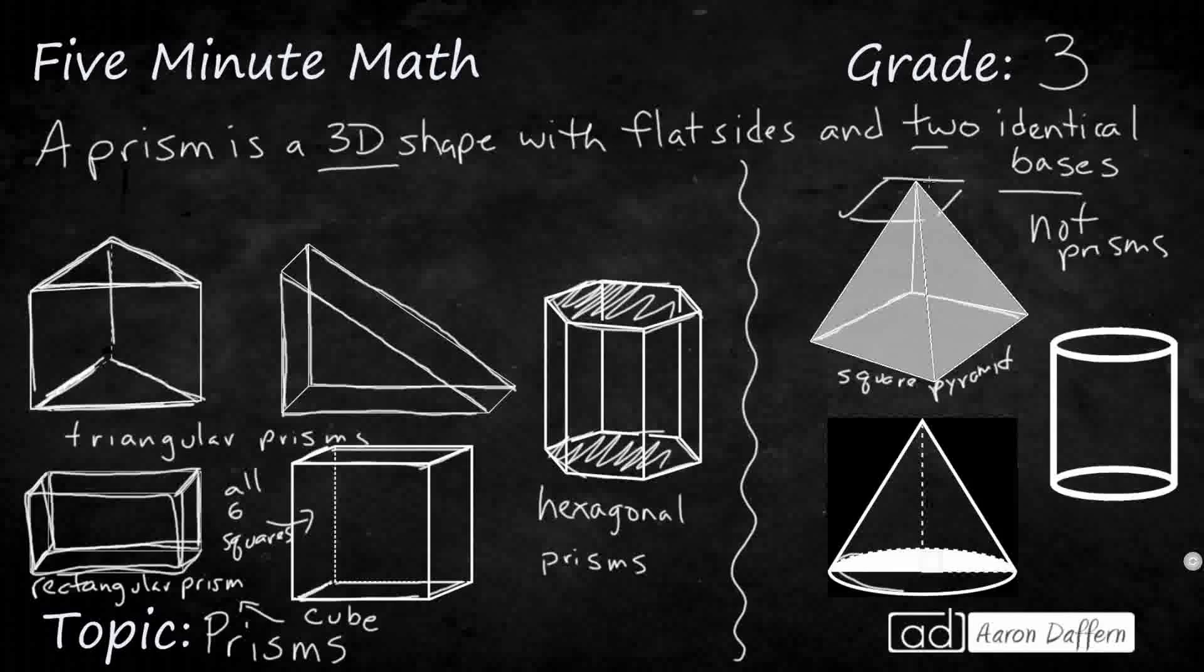This has a circular base, and it's got a curved side. So this cone right here is not a prism, because it doesn't have two identical bases, nor does it have flat sides. Now, this cylinder does have identical bases, but you've got this curved side right here. So it's got the identical bases, but it's got a curved side, so it's not a prism.